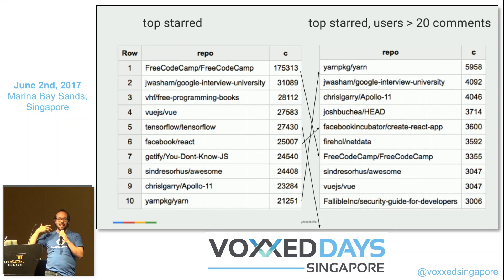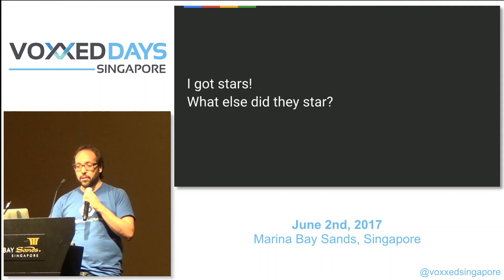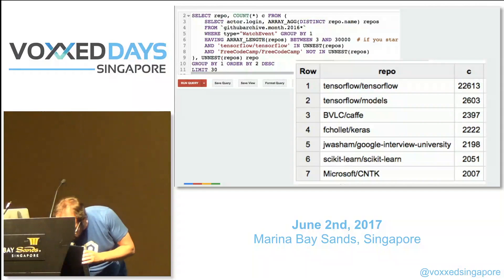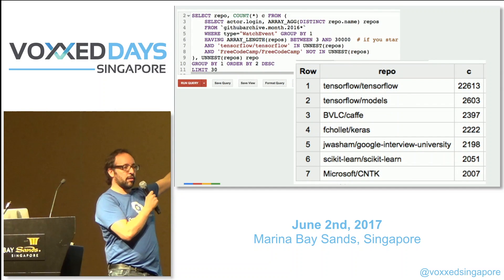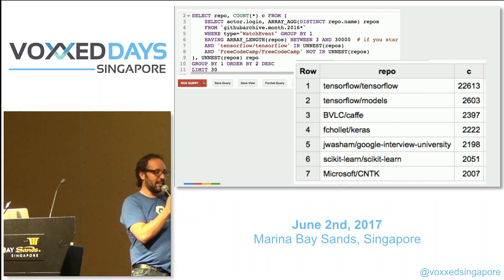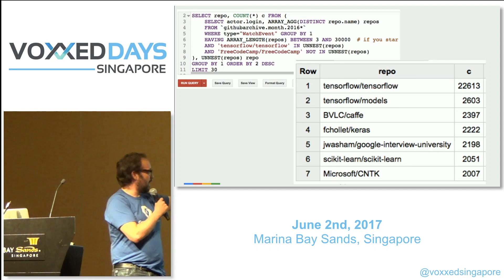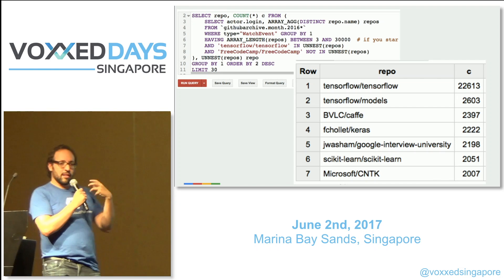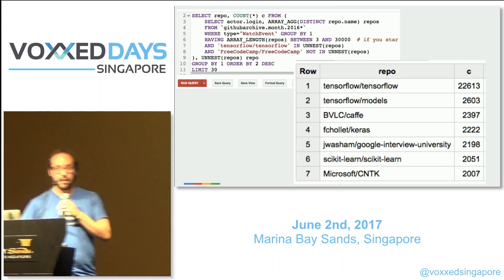The message here is: always look at more dimensions — look at what kind of data you care about. When a project has stars, you can start looking at where else those people starred. With a query looking at people who starred TensorFlow, it quickly gives me all the other machine learning projects on GitHub: TensorFlow models, Caffe, Keras, Google Interview University, scikit-learn, Microsoft CNTK. Just by looking at related stars, I start getting a lot more interesting dimensions.